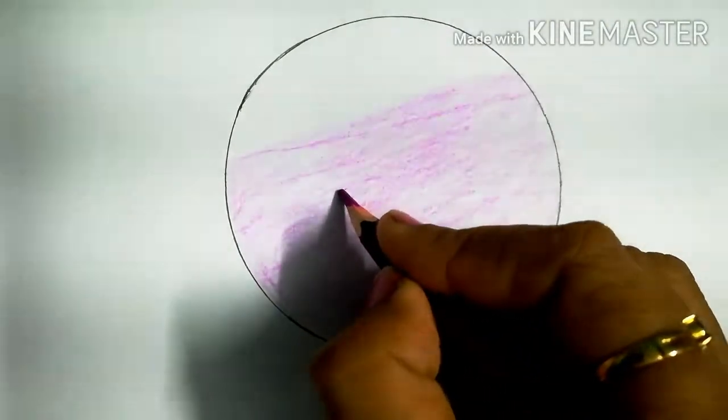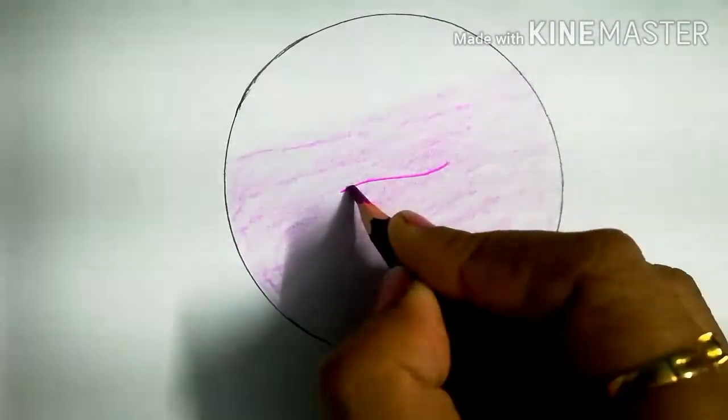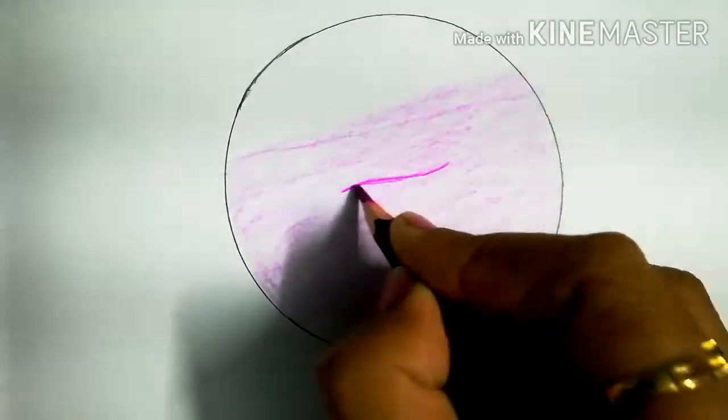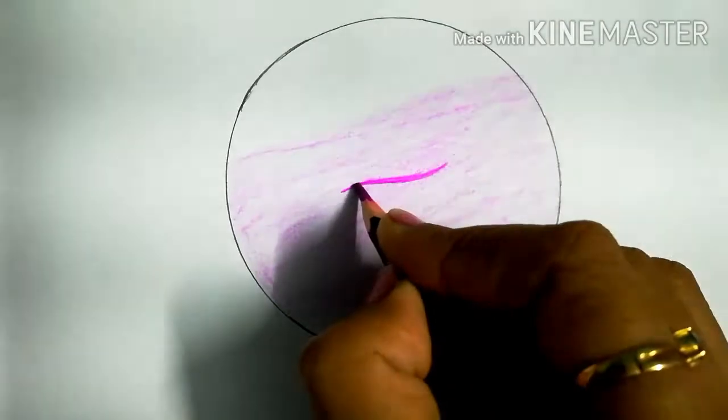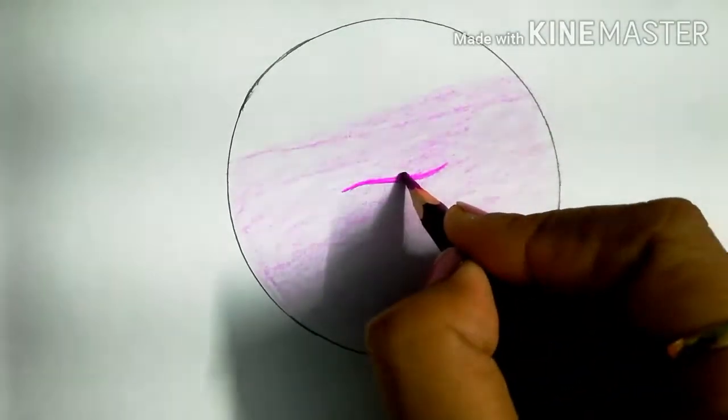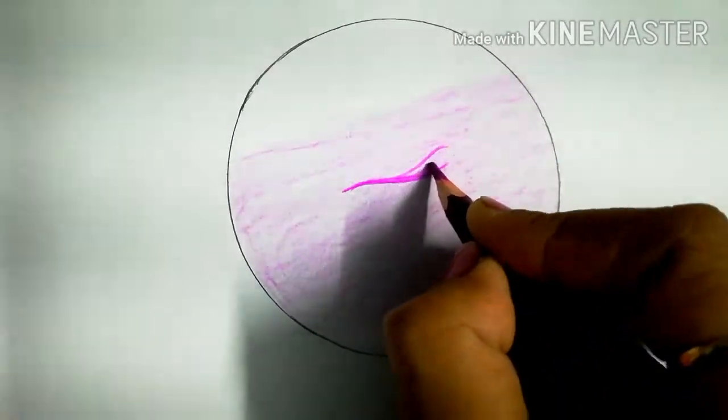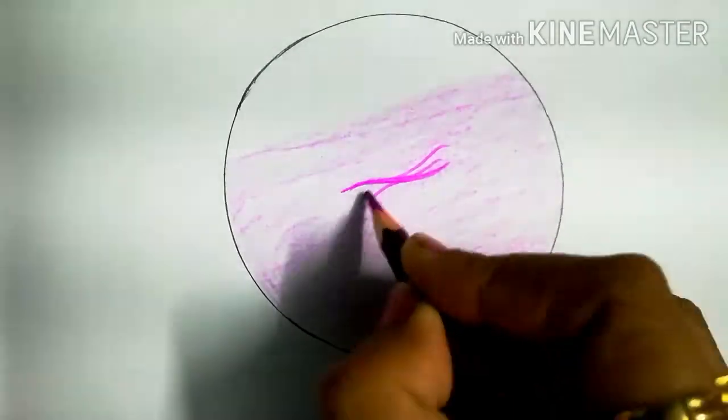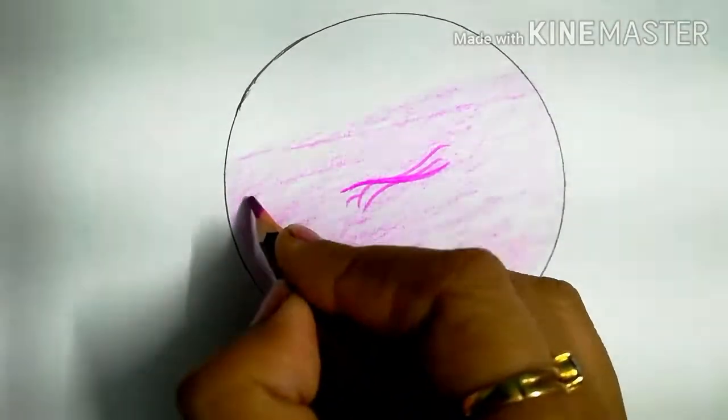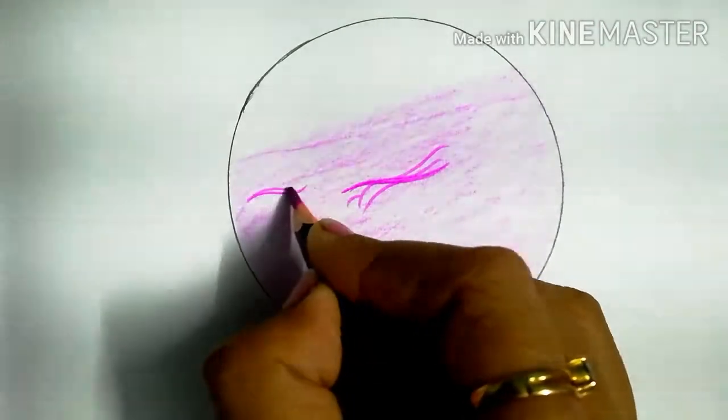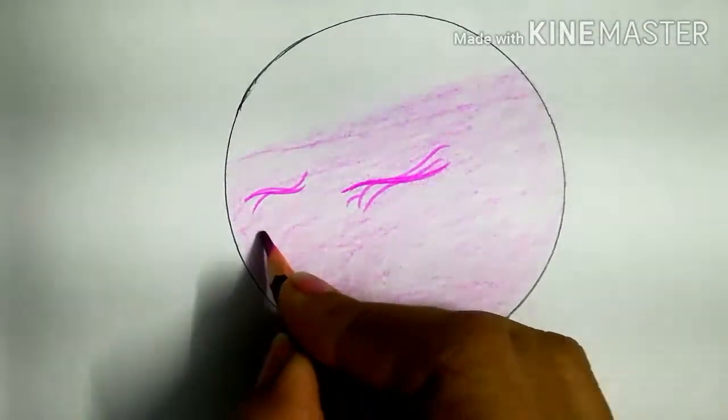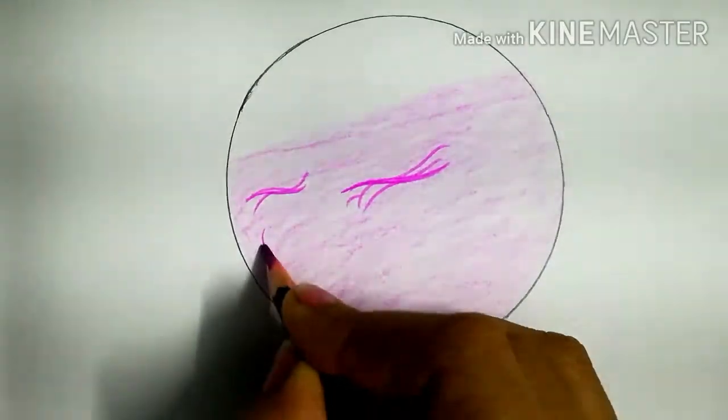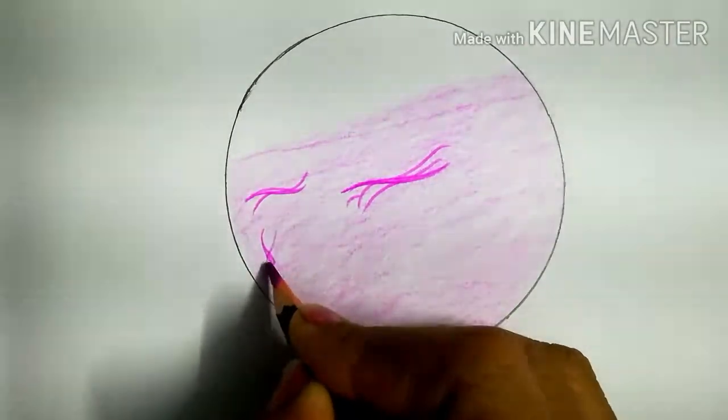They have multiple projections. Our active fibroblasts are present in this type. These are mesenchymal cells. They have multiple projections like this.